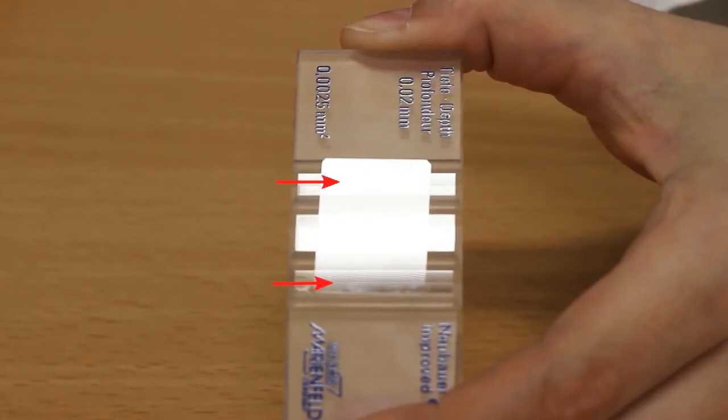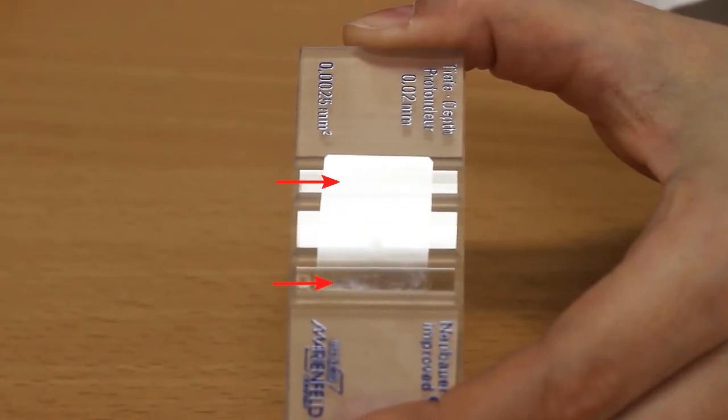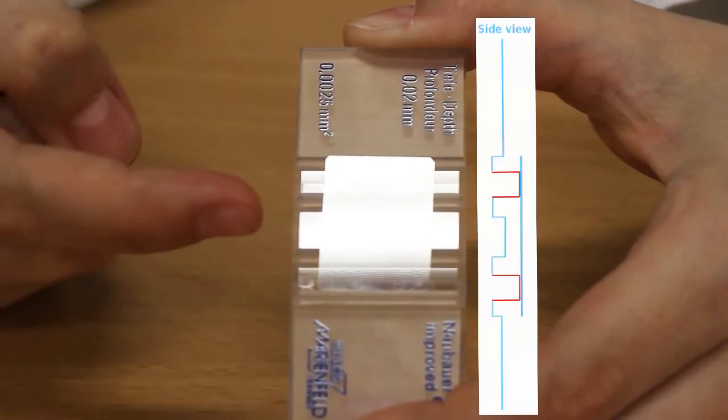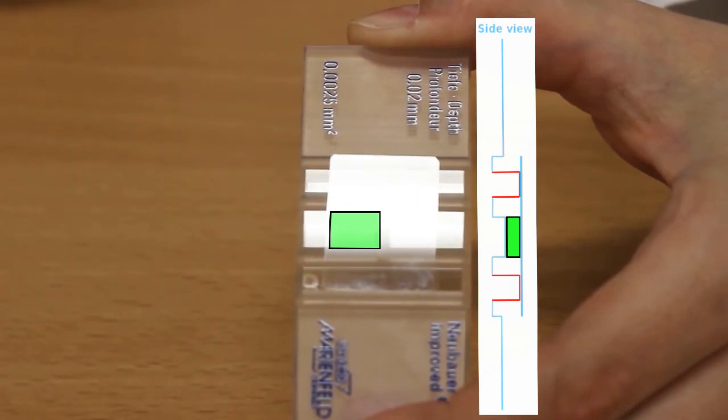If the coverslip is placed correctly, ring-shaped interference patterns called Newton rings can be observed. A chamber of defined height is created between the coverslip resting on the support structure and the sample below.